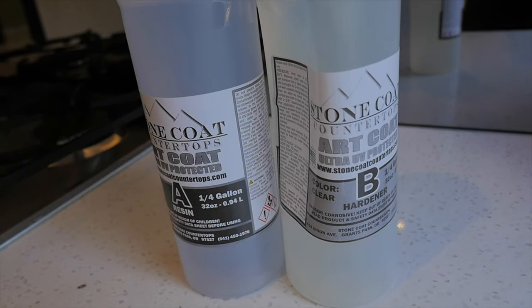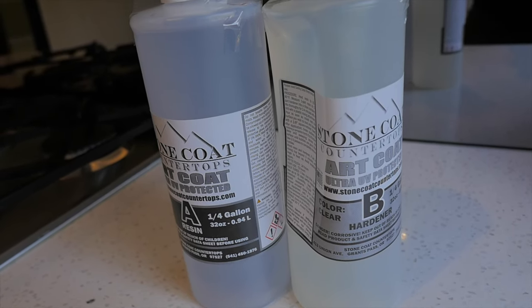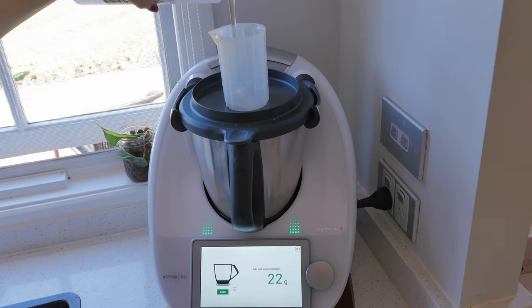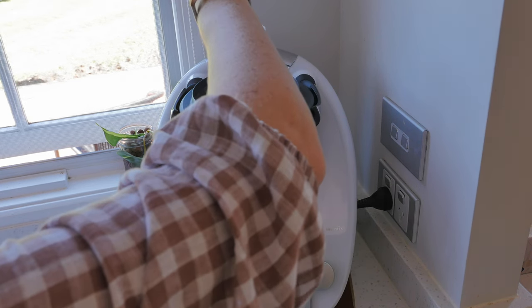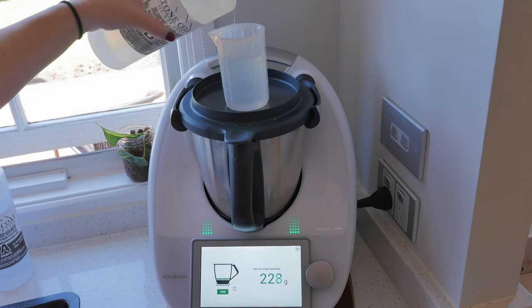So the resin that I'll be using is from Stone Coat and it's an art coat resin and the temperature rating for this is 245 degrees Celsius. So hopefully when it cures, it's not going to melt off the side of my bike.